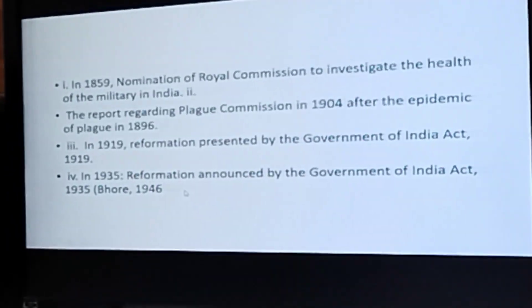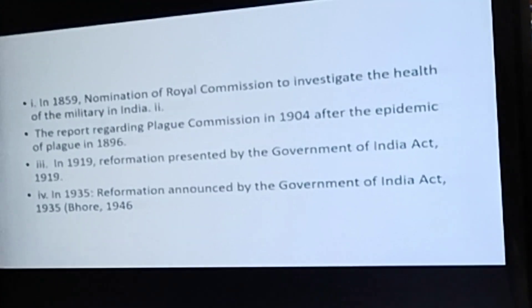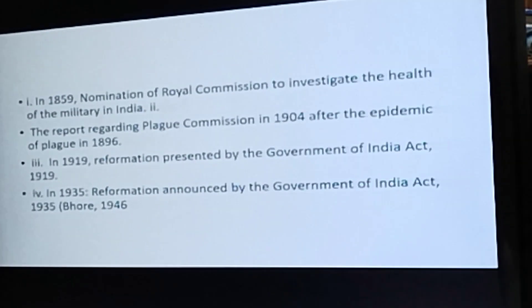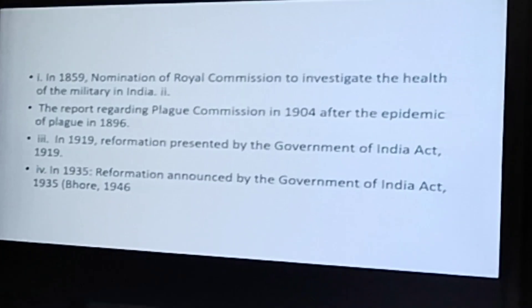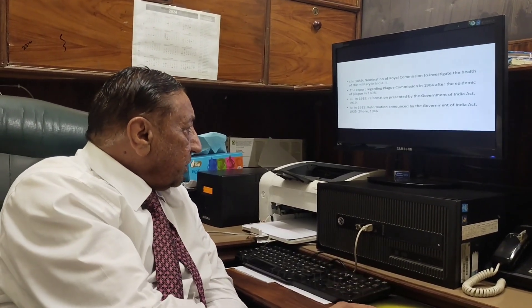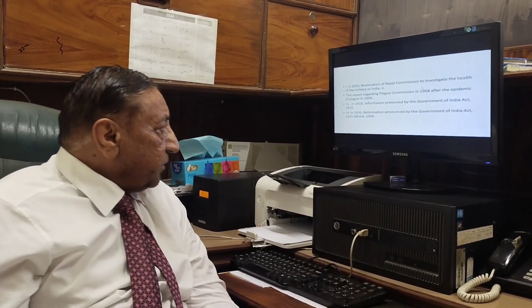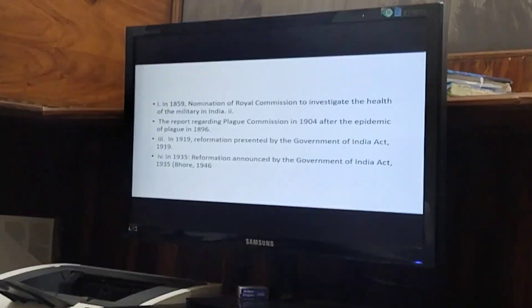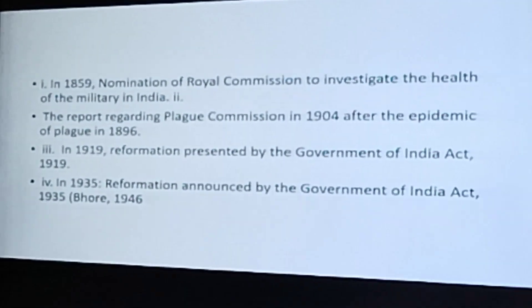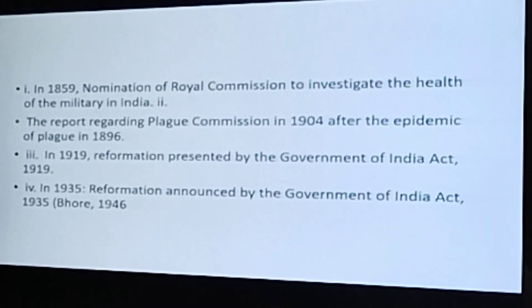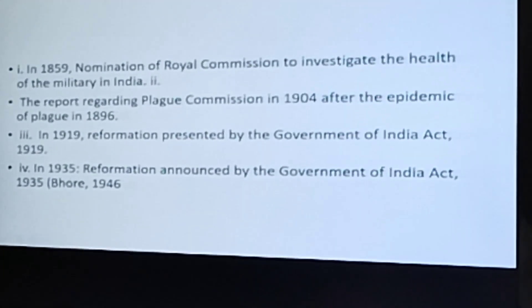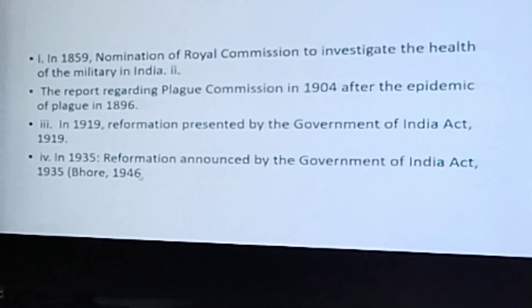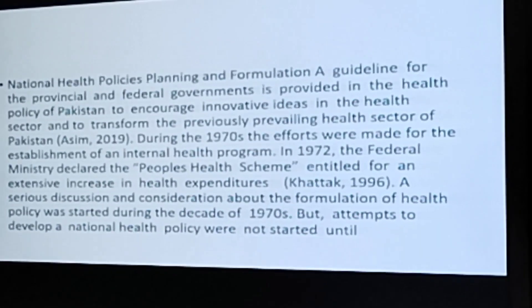Key milestones include: 1859 — nomination of a Royal Commission to investigate the health of the military in India, where the main concern was military personnel, not the general population. The plague hit the subcontinent around 1904, and the epidemic of 1896 led to a plague commission report in 1904. Then in 1919 and 1935, health reforms were announced by the Government of India Act.